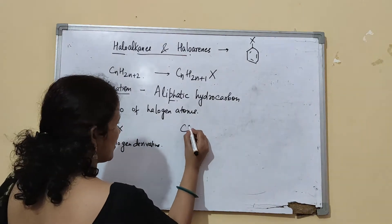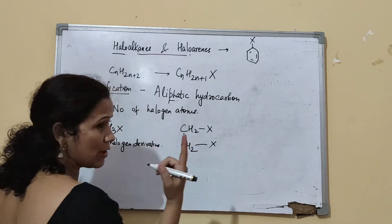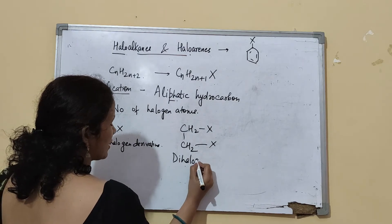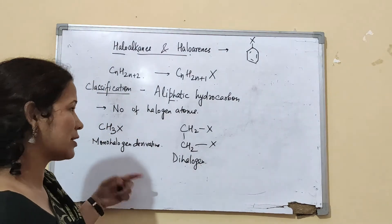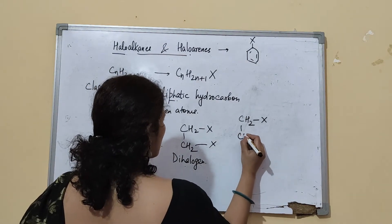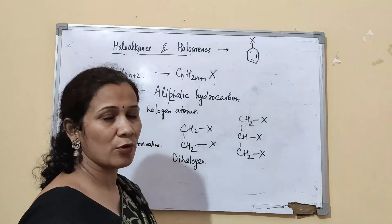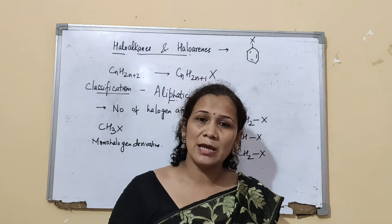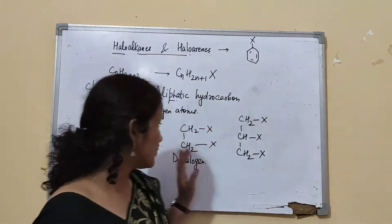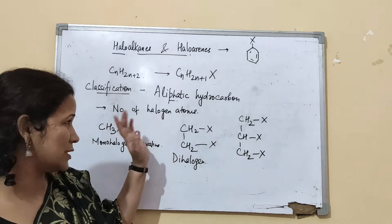Coming to two halogens: if you have two halogen derivatives, you call it a dihalogen derivative. Similarly, you can have three or more — we call it a polyhalogen derivative. Polyhalogen derivatives are now not in the syllabus. So this classification is based on the number of halogen atoms, or depending on the nature of the halogen atom.